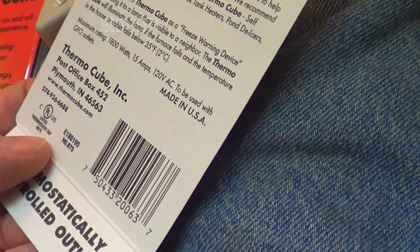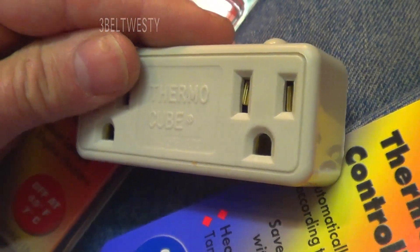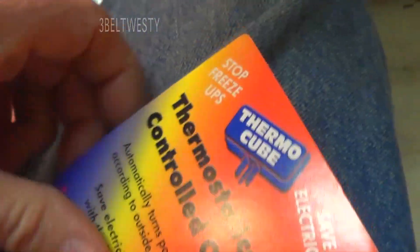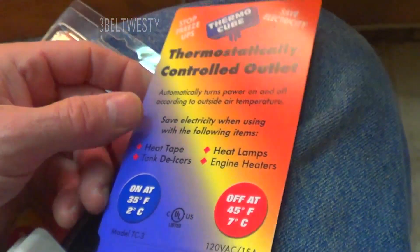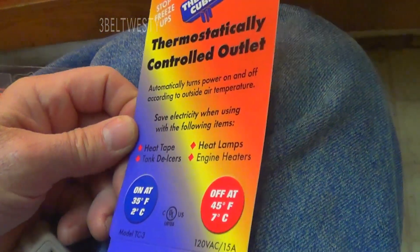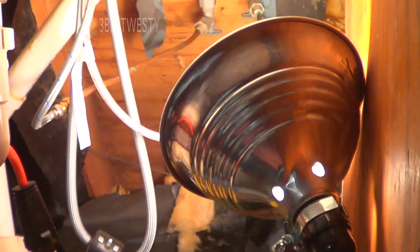Again, it's a model TC-3, called a Thermal Cube. I searched all along for something, and these are just reasonably priced. 12, 13 bucks I think is a great idea because you can just rig up a light, make sure it's secure, make sure the light turns on, and you just put this in series here.